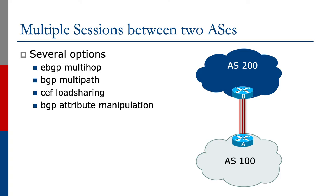We will now look at multiple sessions to an ISP in a little bit more detail. This is a case where an end user may have multiple links from their router to their neighboring autonomous system or upstream provider. There are several options available and we are going to look at eBGP multi-hop and BGP multi-path as two of the possibilities.